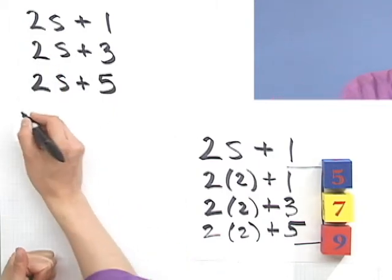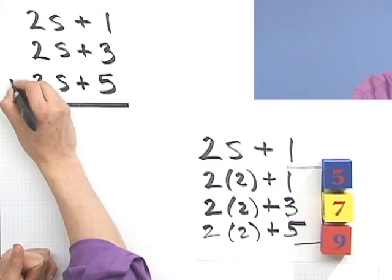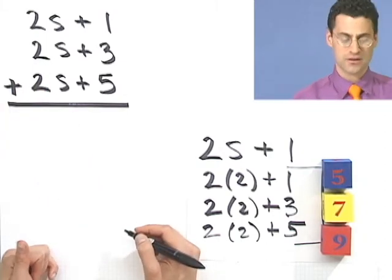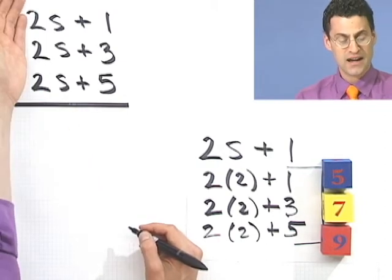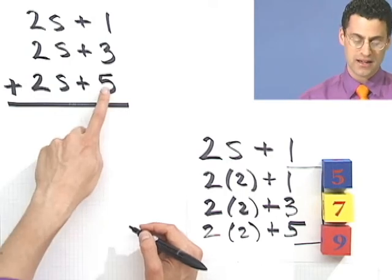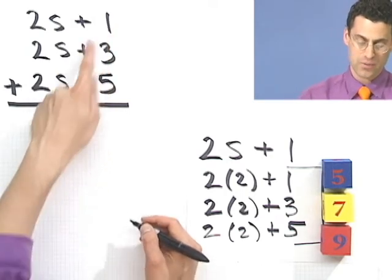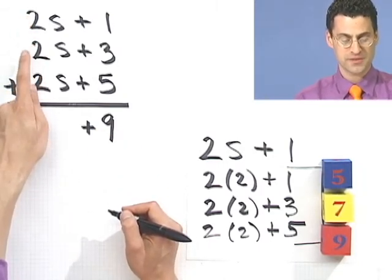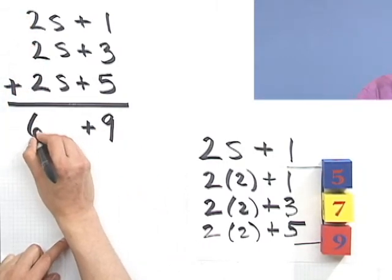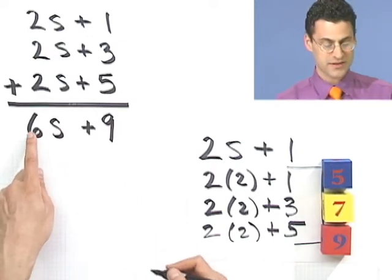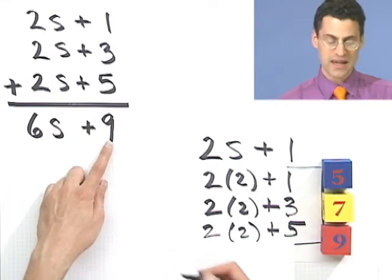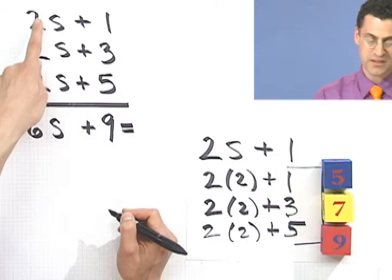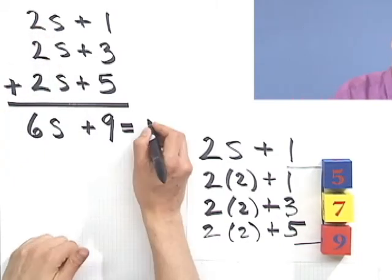Okay? And what do I want to do? I want to add them all up. And what's the answer? The answer is 99. But I can actually add these up. Let's add them up. Here I have five, and three is eight, and one is nine. And here I have two s plus two s plus two s, so that's six s. So I have six s plus nine, and that has to equal what? Well, what's the sum? If you look at the question, the sum is 99.